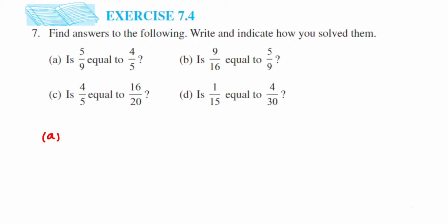They are asking us to indicate how we got the answer. There are two ways we can do it — simply by cross multiplying, or there is one more method. The cross multiplication method is: you just cross multiply the numerators and denominators. So 5×5 is 25 and 9×4 is 36. These numbers are not equal, which means the fractions are also not equal. I'm going to show you how to get the answer by both methods.